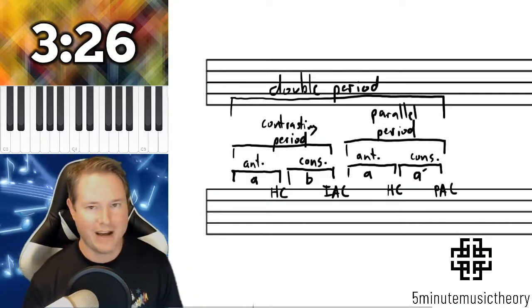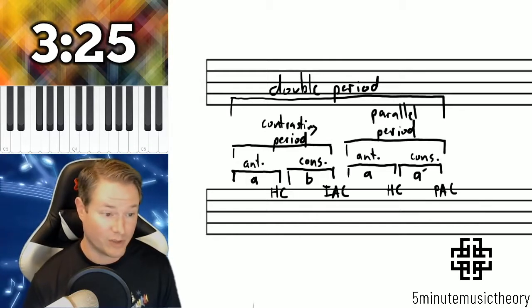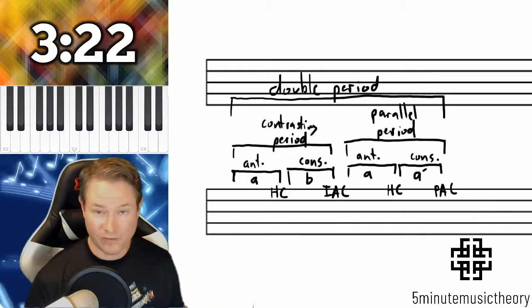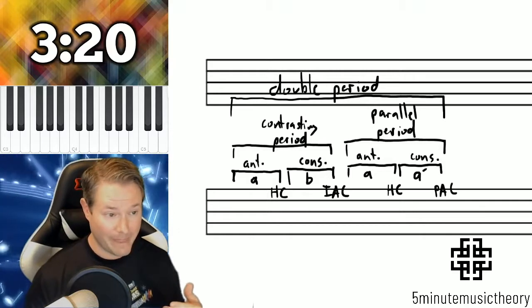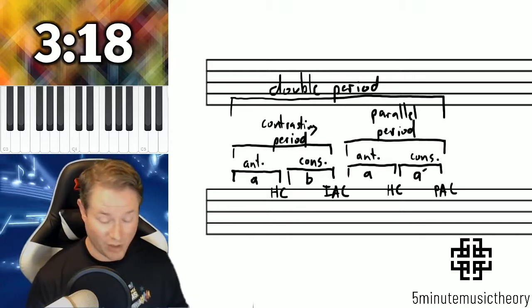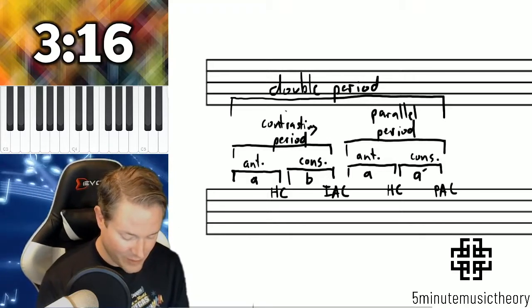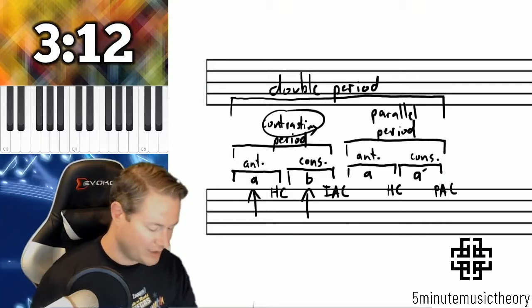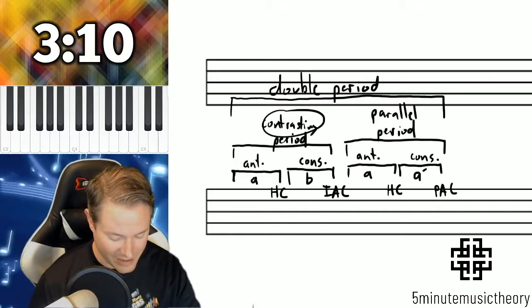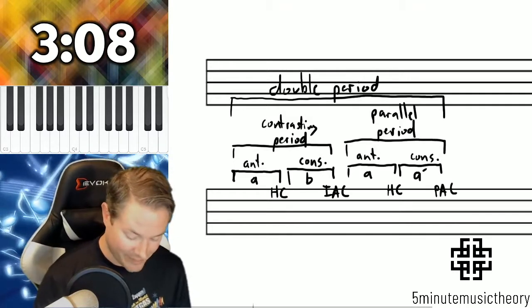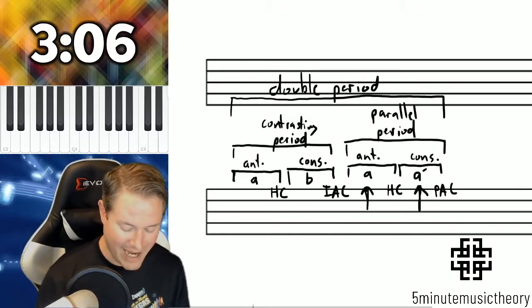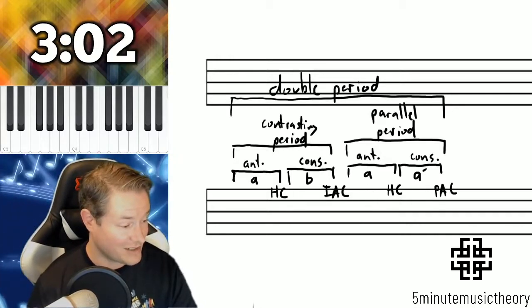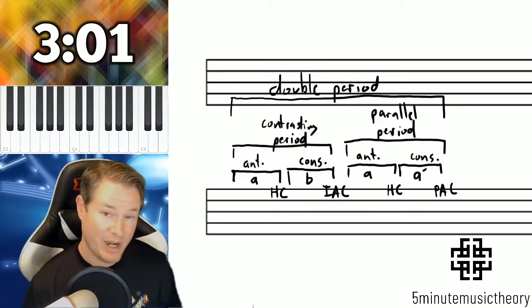A double period can have either a contrasting or parallel relationship. Let's review the difference: the first one was contrasting because there was an A followed by a B — two completely separate phrases, which makes them contrasting. The next one is parallel because we had an A followed by A prime, the same material just with different cadences, making that a parallel period.